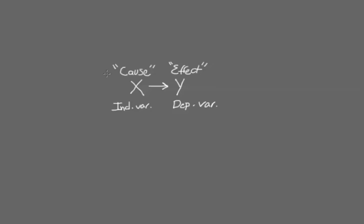We put those in quotes because we don't know if it's cause and effect, but we at least have a theory that it's cause and effect. In statistics and regression in particular, the X or causal variable is referred to as the independent variable and the Y or effect variable is referred to as the dependent variable.